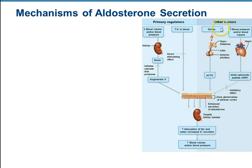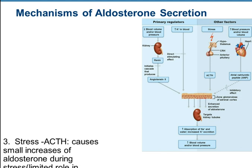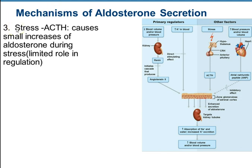The other two regulators are not as potent or important as the first two. The first of these other factors is stress, or adrenocorticotropic hormone. ACTH is released by the anterior pituitary in response to stress. Primarily what it does is cause the secretion of cortisol, which is a glucocorticoid — your stress hormone — that we'll talk about later. But if you have elevated levels of ACTH for an extended period of time, it can cause an increase in aldosterone secretion.